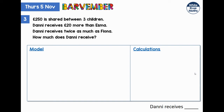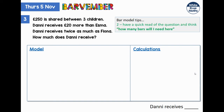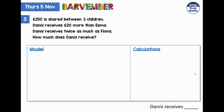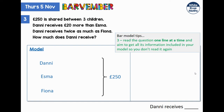Question three. Start off as normal — how many bars will I need? I think it's going to be three because we've got three children. What we're going to do here is read the question one line at a time and transfer all the information into our model, so that we only need to read this long-worded question just the once. Line one: £250 shared between three children. So there are my three bars, my curly bracket saying that £250 covers all of that.